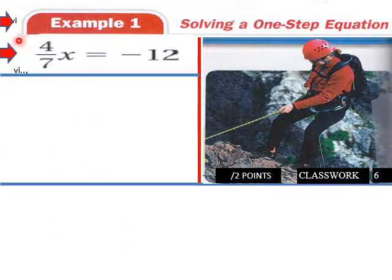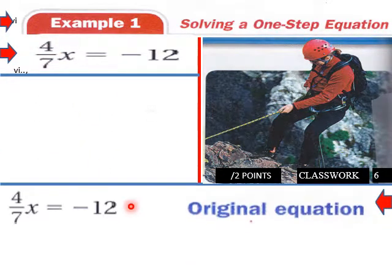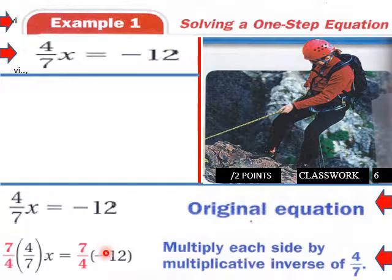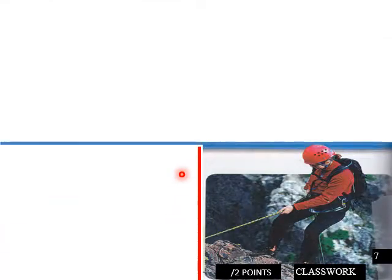Example one, a one-step equation: 4/7 x equals negative 12. There's the original, so what do we do? We multiply by using our multiplicative inverse, which is 7 over 4. What we do on this side we have to do on this side of the equal sign. So multiply each side by multiplicative inverse of 4 over 7. That's the multiplication property of equality in solving equations.